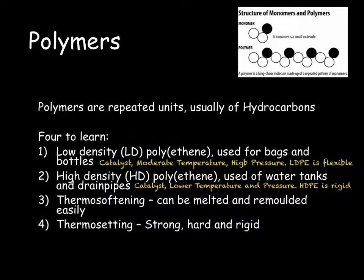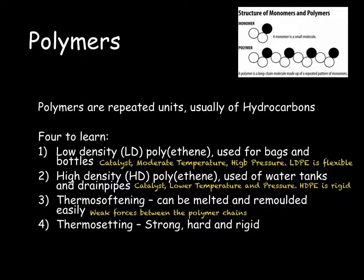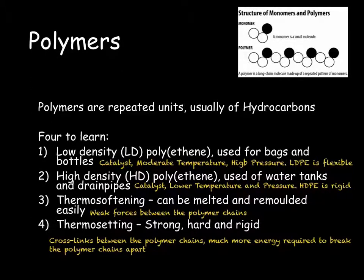You also need to know about two other types of polymers, which differ by how the chains of the polymer interact with each other. First, we have thermosoftening polymers. In these, we can easily melt and remould the polymer, because the individual polymer chains are entwined together with weak forces, so it doesn't take much energy to break these. Thermosetting polymers, on the other hand, are much stronger, harder and more rigid, because the monomers form cross-links between the polymer chains, meaning the chains are held together in a solid structure. This means you need more energy to break these chains apart, and therefore they do not soften when they are heated.